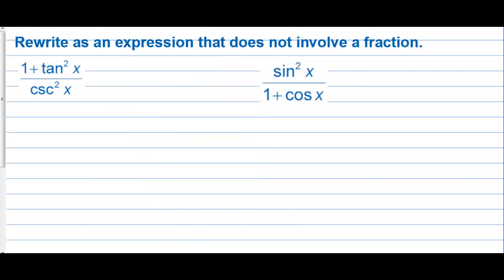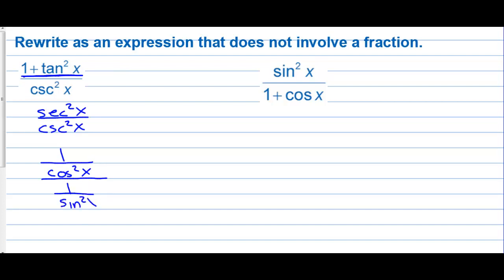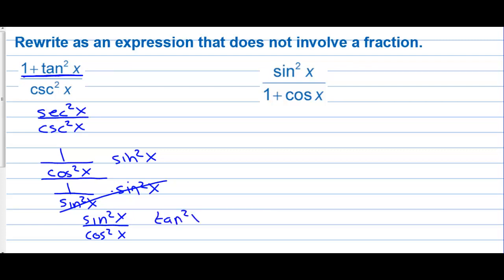Rewrite as an expression that does not involve a fraction. One plus tangent squared is secant squared by the Pythagorean identity, and we have this over cosecant squared. Secant squared is one over cosine squared, and cosecant squared is one over sine squared. Multiply the top and bottom by sine squared: those cancel, and we're left with sine squared over cosine squared. Since sine over cosine is tangent, this is tangent squared.